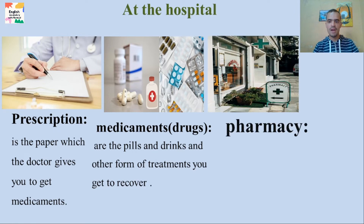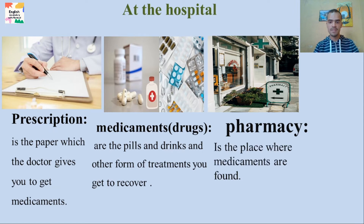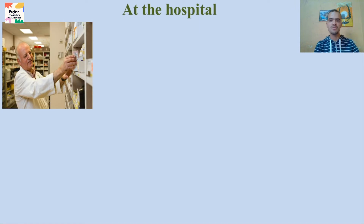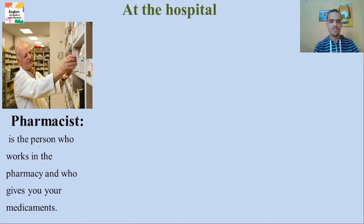In this picture we have the pharmacy. The pharmacy is the place where medicaments are found — you go there to buy your medicaments. Within the pharmacy we find the pharmacist, the person who works in the pharmacy and gives you your medicaments according to the prescription. The pharmacist reads the prescription and gives you the right medicaments for your disease.